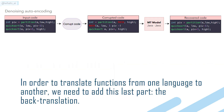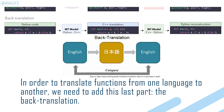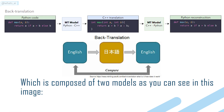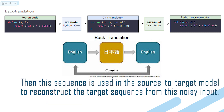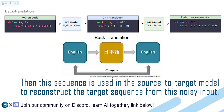In order to translate functions from one language to another, we need to add this last part: the back-translation, which is composed of two models as you can see in this image. The target-to-source model is used to translate the target code into the source code, producing a noisy source sequence. Then this sequence is used in the source-to-target model to reconstruct the target sequence from this noisy input.